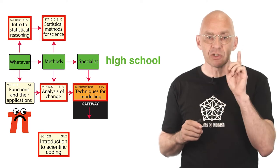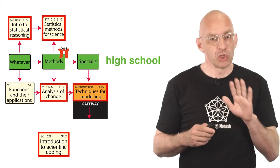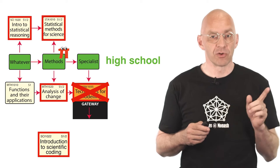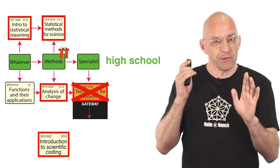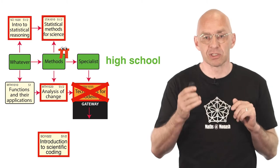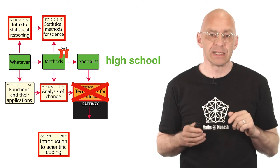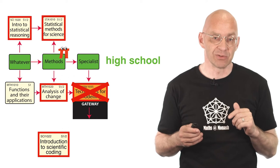Now whichever green box you're in, say you're in the green methods box, you cannot enroll in any unit to your right. The remaining ones are in principle all open to you. Having said that, if you're in the methods or specialist box you can only enroll in the units below if you scored at least a raw 25 or a raw 30 in those VCE units.